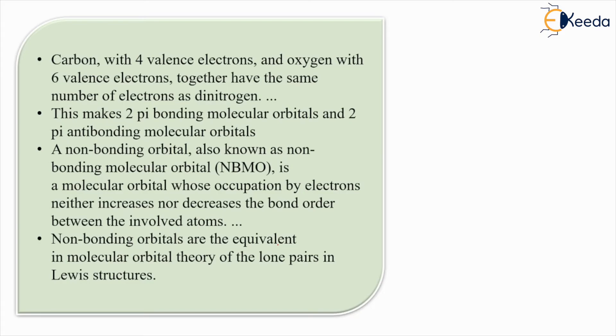Carbon, with 4 valence electrons, and oxygen, with 6 valence electrons, together have the same number of electrons as dinitrogen. This makes 2 pi bonding molecular orbitals and 2 pi antibonding molecular orbitals. A non-bonding orbital, whose occupation by electrons neither increases nor decreases the bond order between the two atoms. Non-bonding orbitals are the equivalent in molecular orbital theory of the lone pairs in Lewis structures.